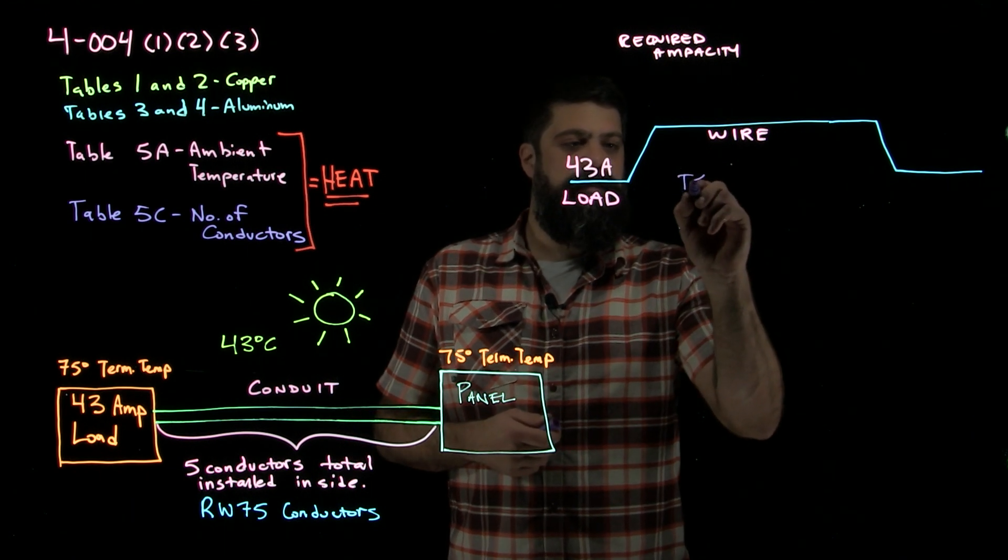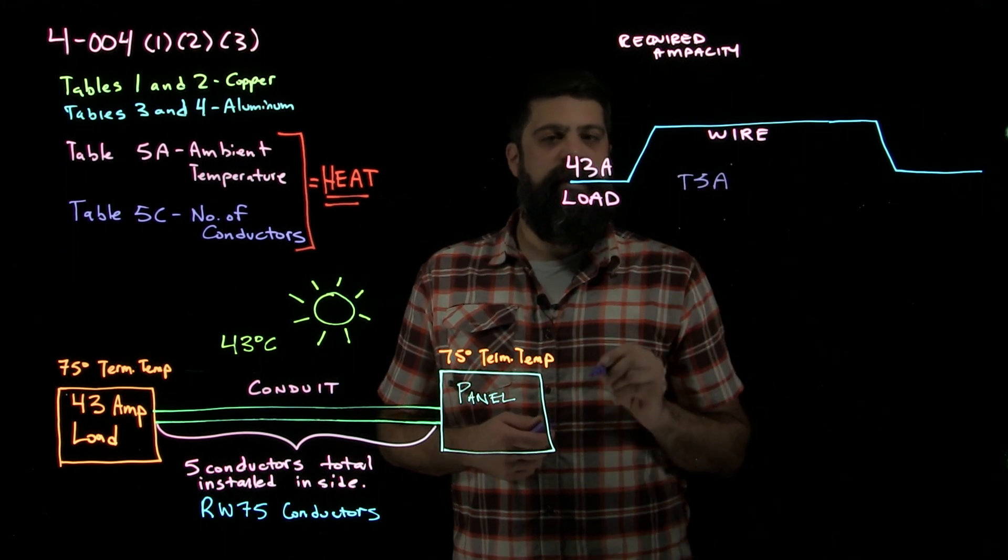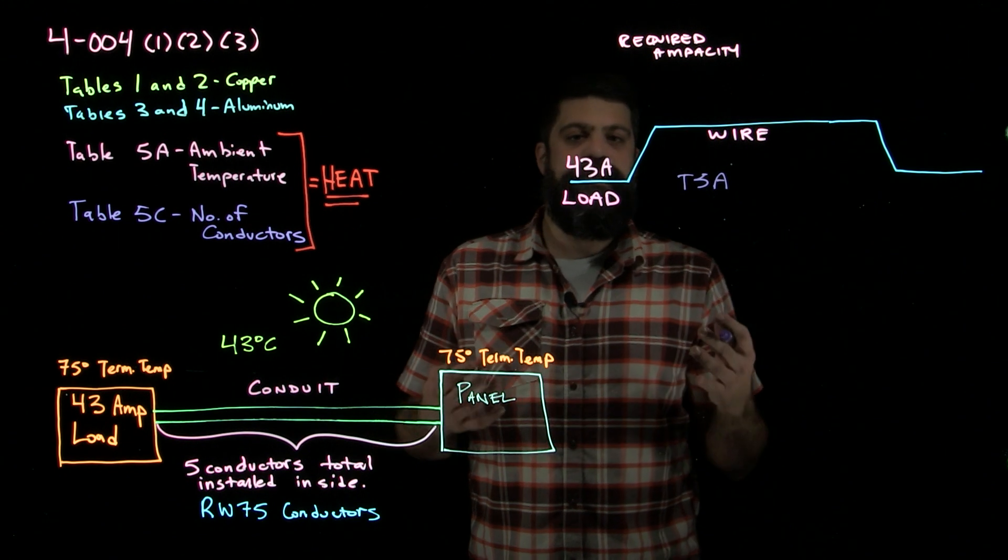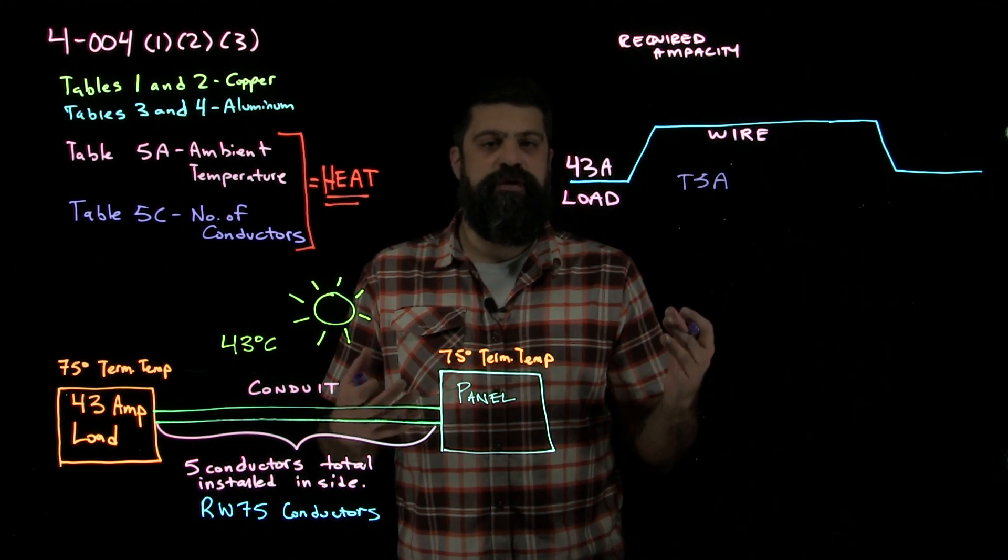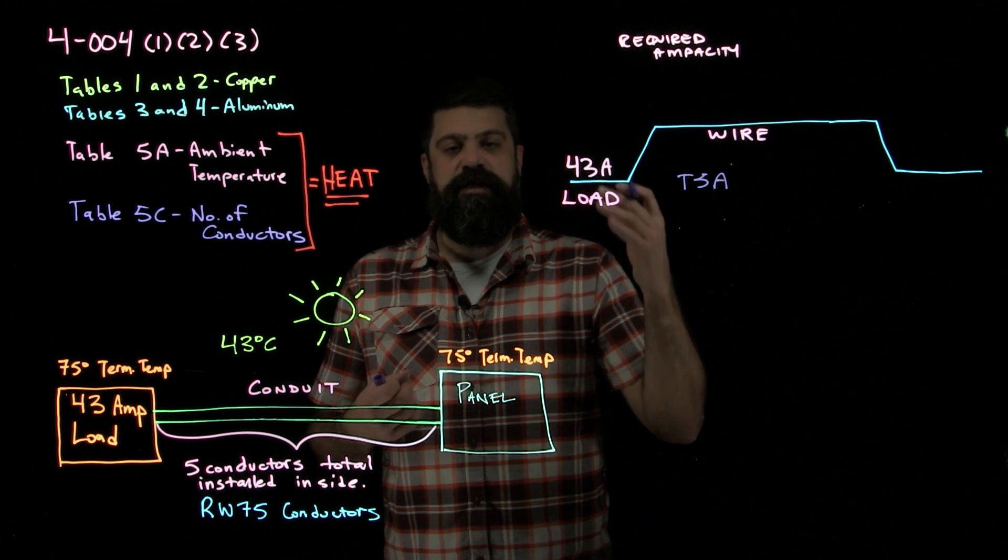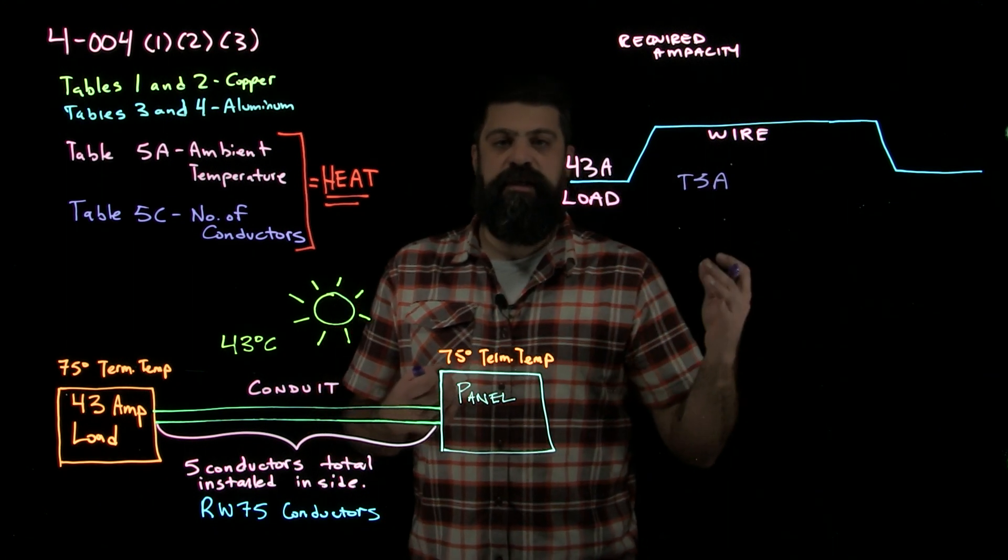So table 5A, we're looking for an ambient temperature. As you go through table 5A and you see all the different temperatures in there, you also notice that there's columns. We have a 60 degree, a 75, a 90 degree, etc. column.